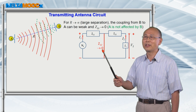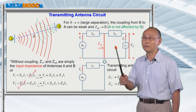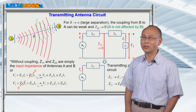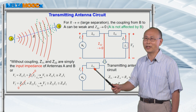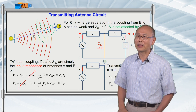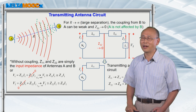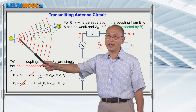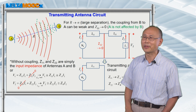So we can simplify this transmitting antenna circuit into a simple one — just do a short circuit here — so that V2 and I2 are more or less decoupled from Z12. So you have a transmitting antenna circuit where V1 and I1 are only related to Z11. In this case, Z11 is the input impedance of antenna A. That is all, because the influence of B on A is very, very small, so we put the short circuit at the center of this circuit diagram.